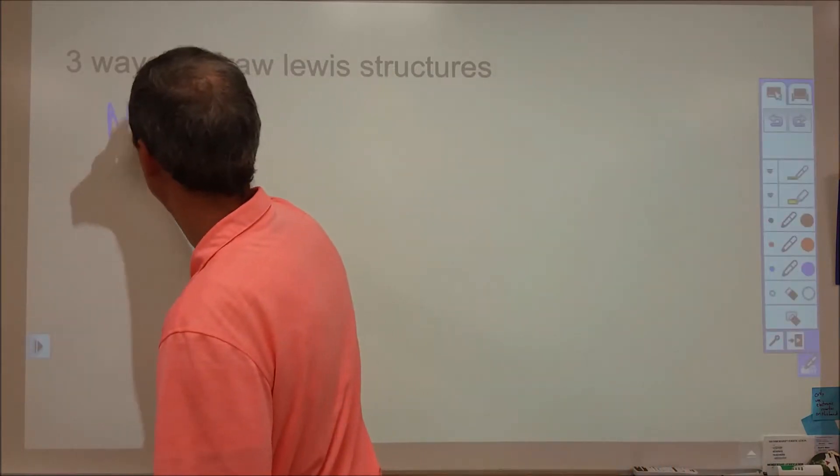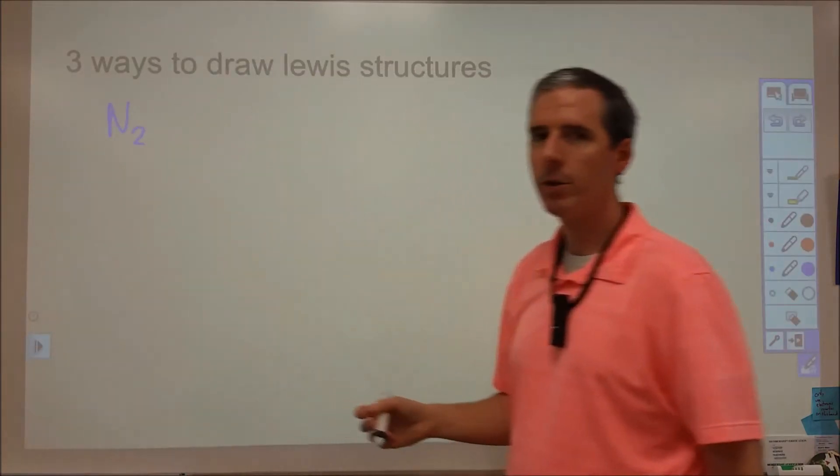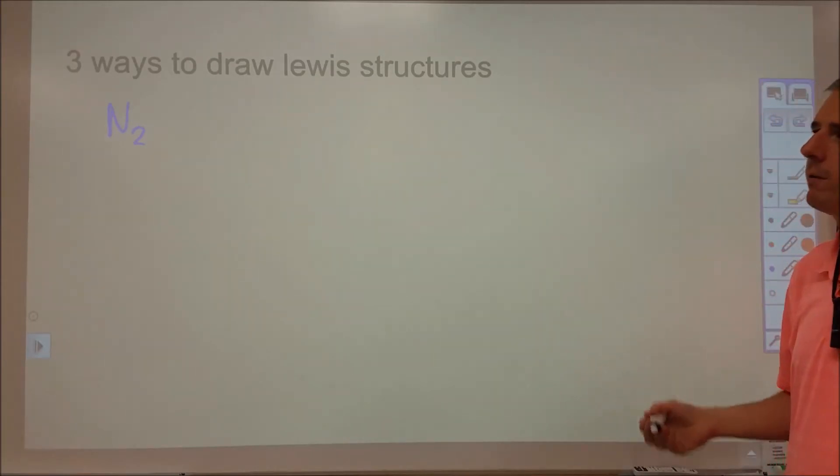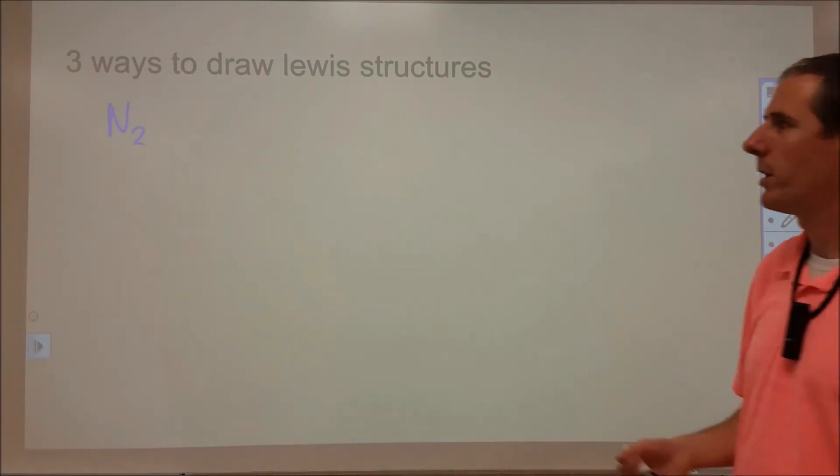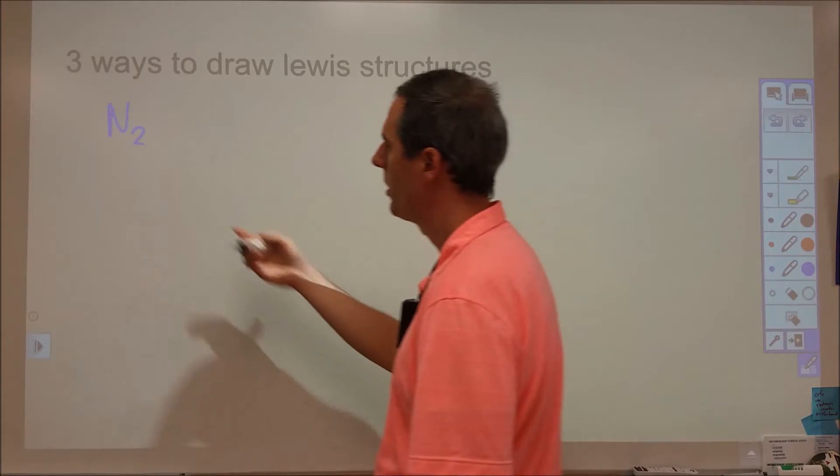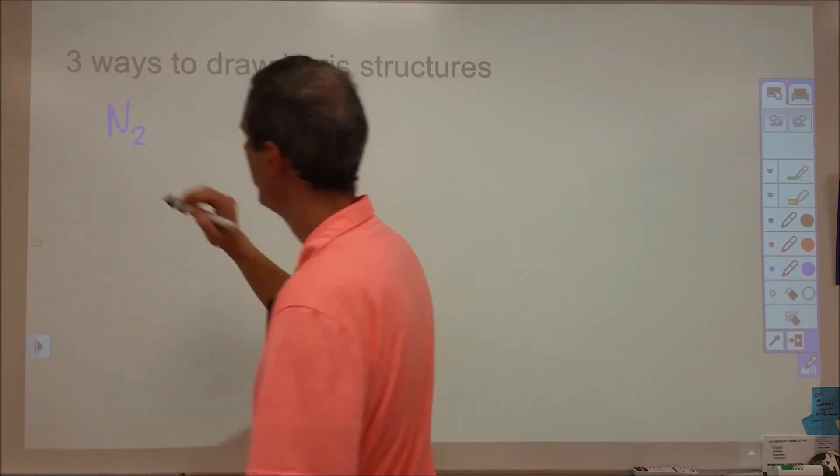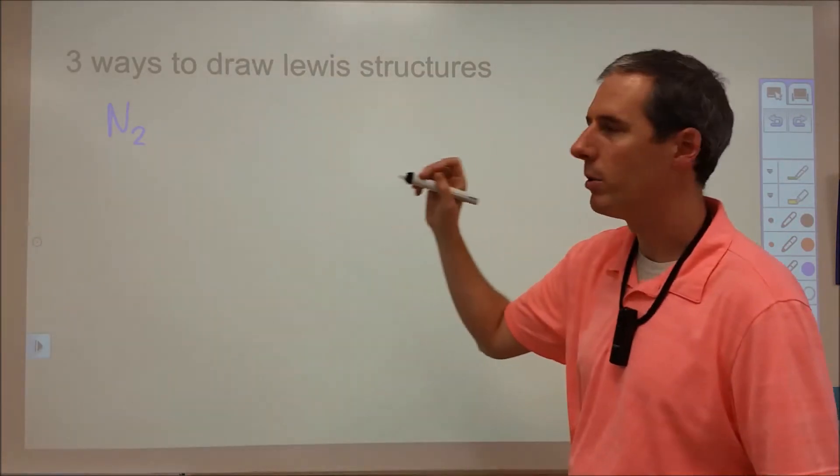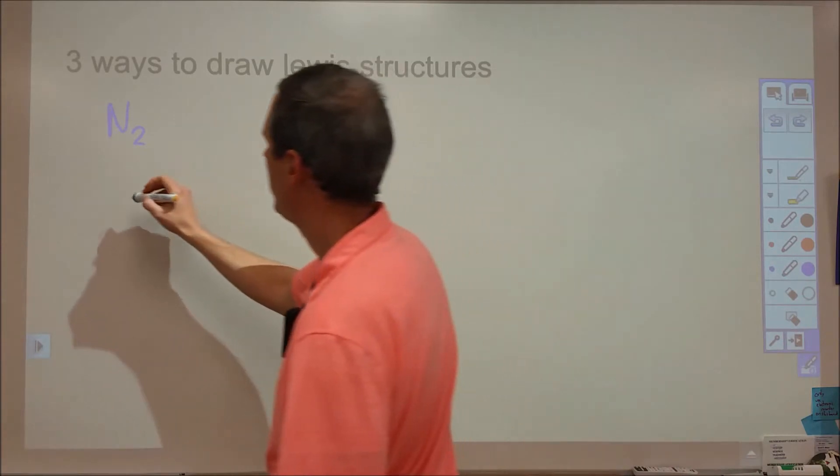First, what we're going to do is we're going to take nitrogen, and at the beginning of the Lewis structure, a lot of the simple ones involve everything obtaining eight electrons besides hydrogen. And so we're going to follow that kind of guideline here. So what we're going to do is we're going to look up on the periodic table how many valence electrons each nitrogen has.